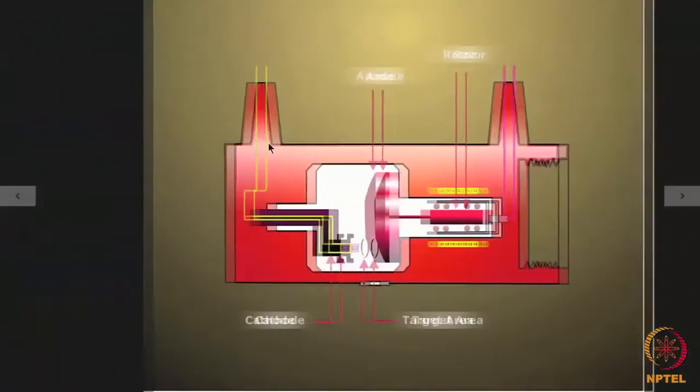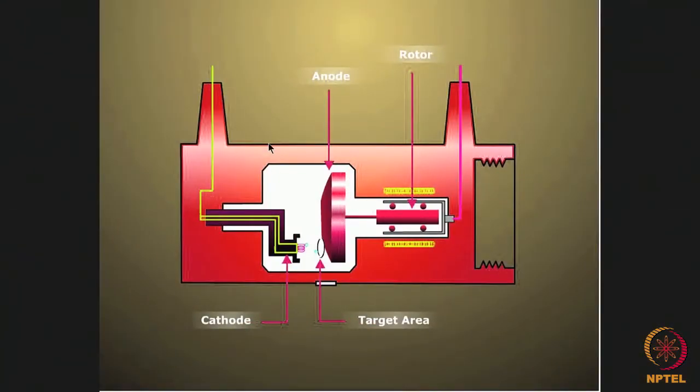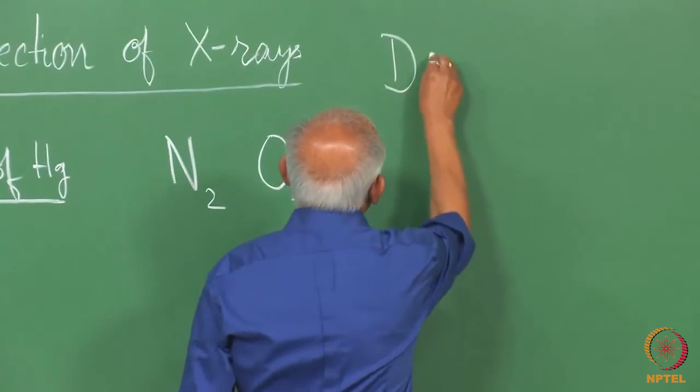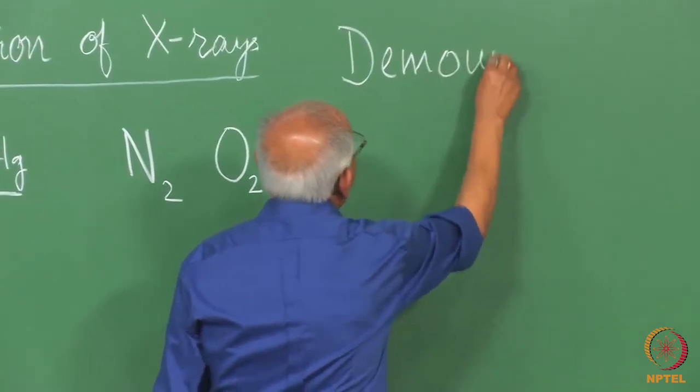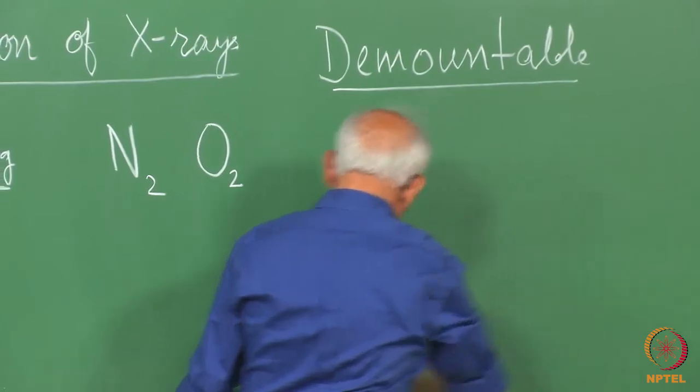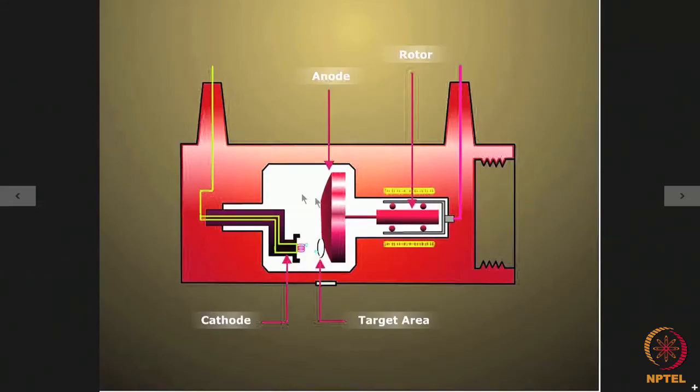There is a possibility that we have what is known as a demountable x-ray tube in which the target can be taken out and replaced by some other material. One disadvantage of this method is every time the target is taken out, the vacuum will be lost and again we have to evacuate it to a very high degree. Technically, it may not be that easy every time.